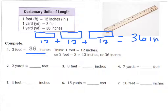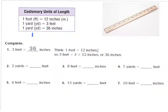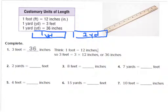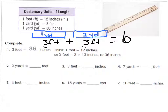Now let's look at number 2. It says that 2 yards equals how many feet? I can see by my chart that 1 yard equals 3 feet. So if I have 2 yards, I can draw my model: 1 yard here, and then 2 yards. I know that 1 yard is equal to 3 feet, and then I have another yard, so I have another 3 feet. I can add 3 feet plus 3 feet, and I would get 6 feet. So 2 yards is equal to 6 feet.